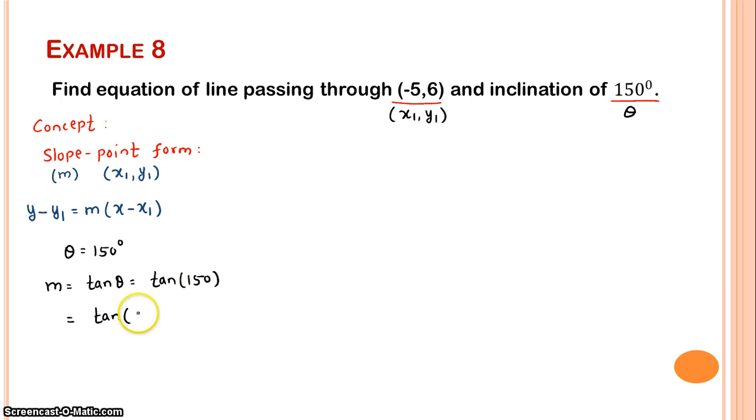From inclination we can find slope. Theta is 150 degrees. How do we calculate? 150 = 90 + 60, which is in the second quadrant. In the second quadrant, tan and trigonometric functions are negative. So m = tan(150°) = -tan(30°) = -cot(60°) = -1/√3. Tan 60 is √3, so cot 60 is 1/√3.